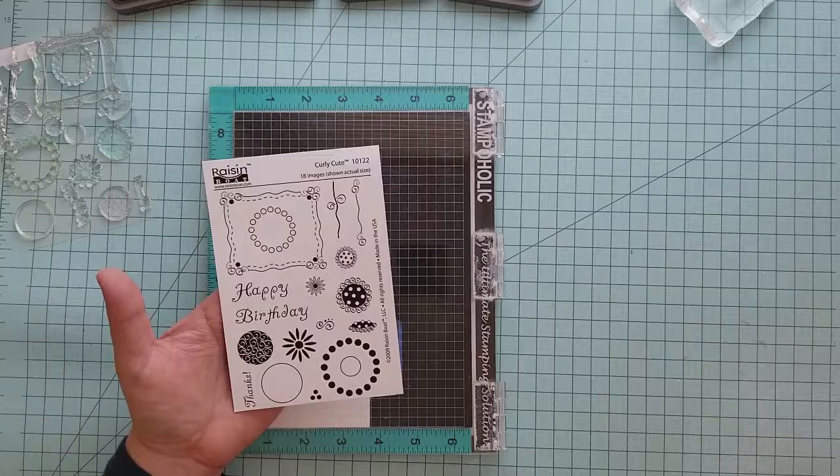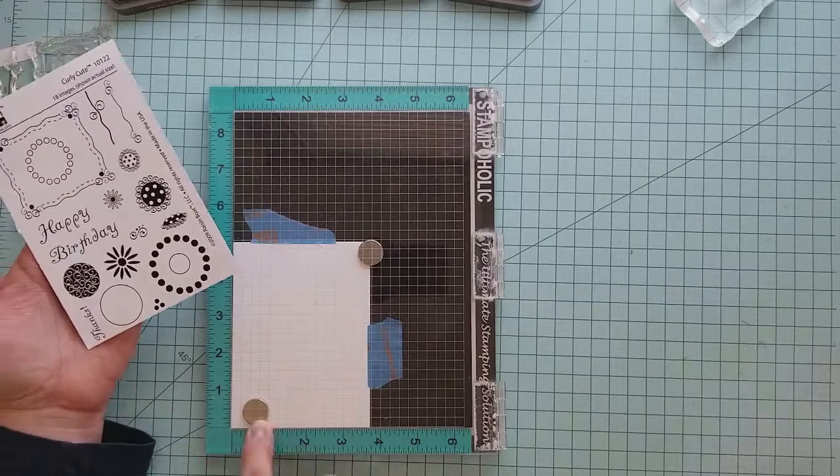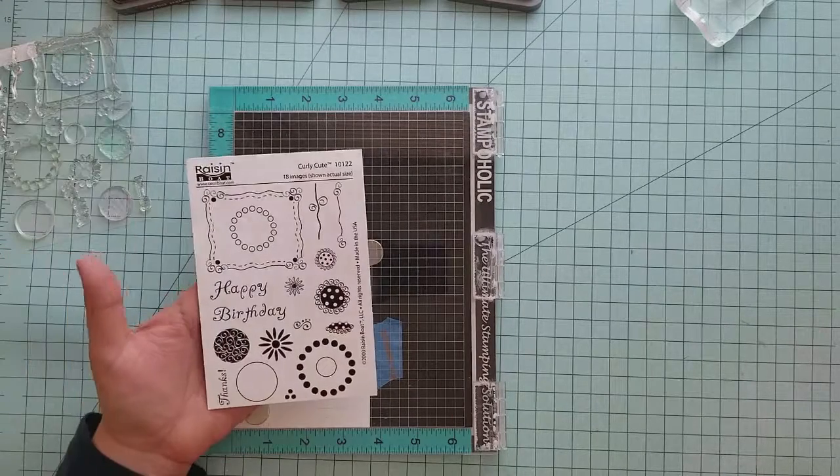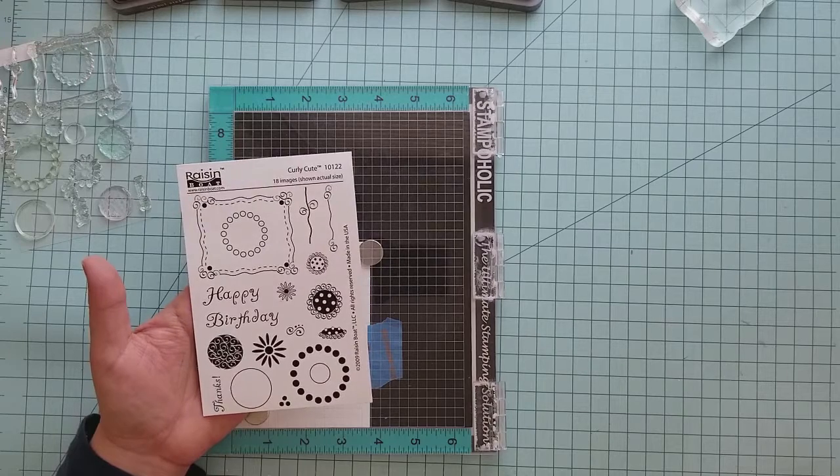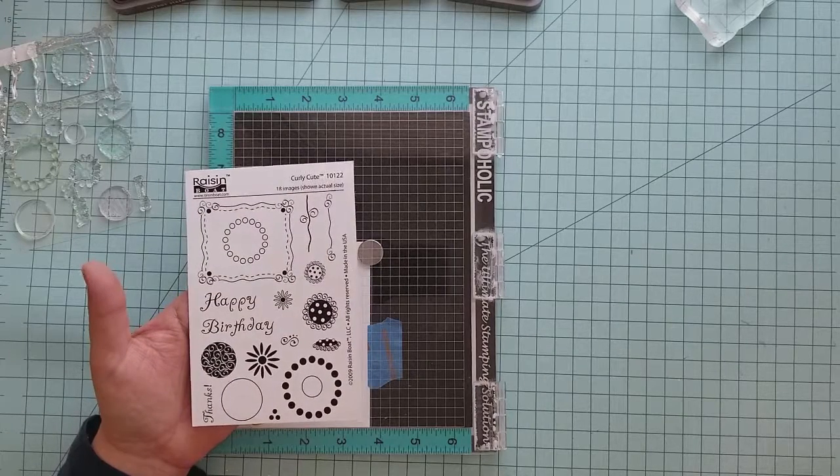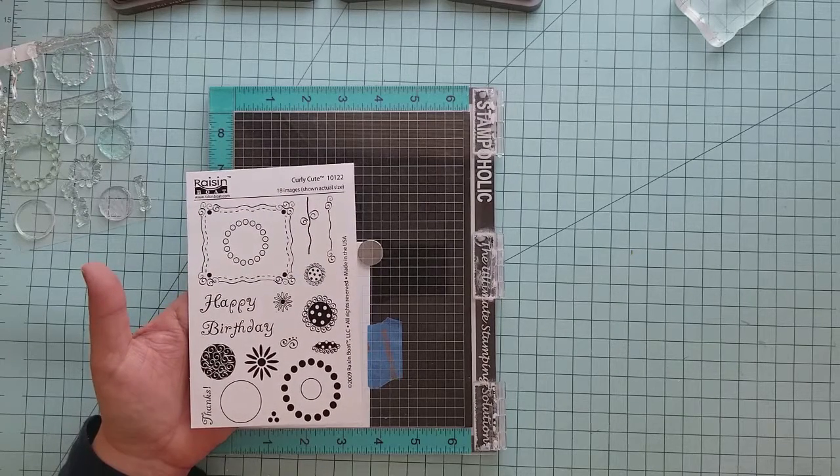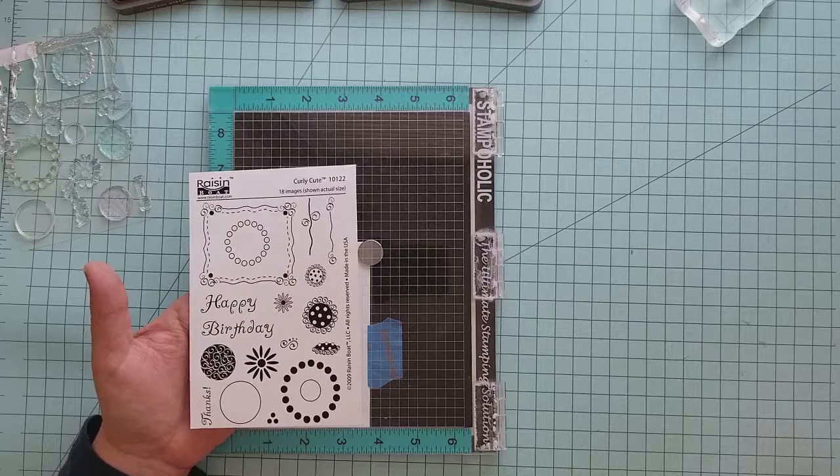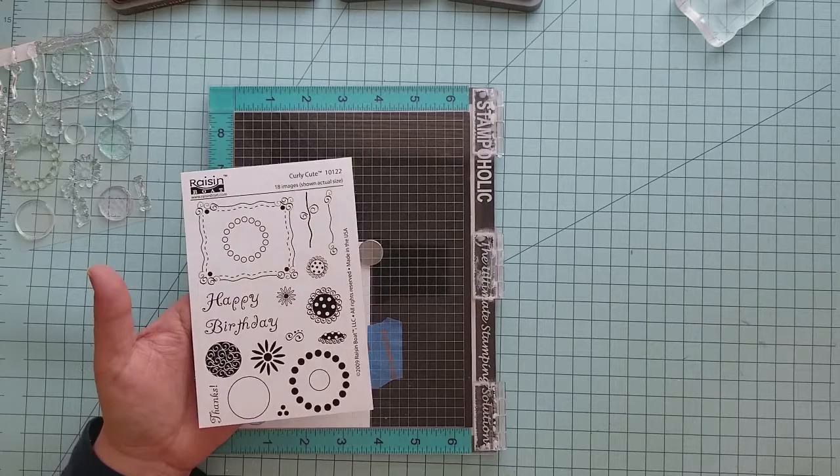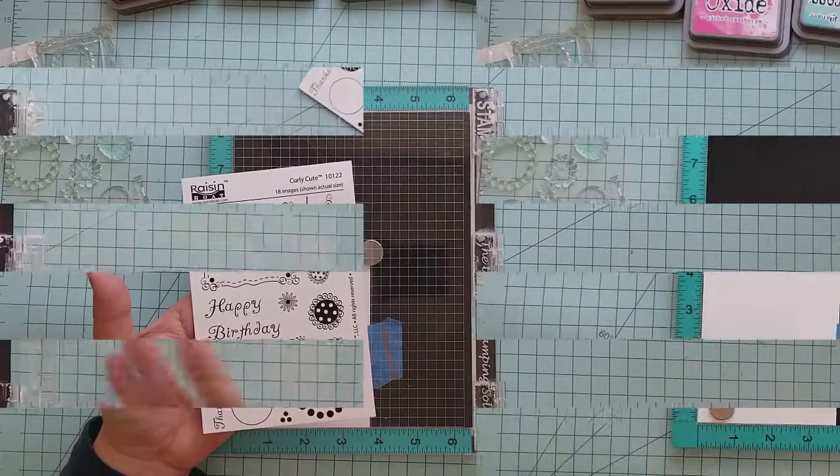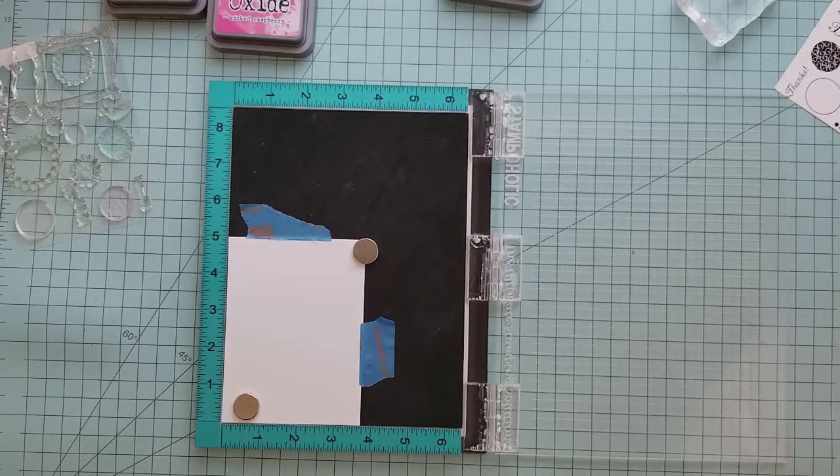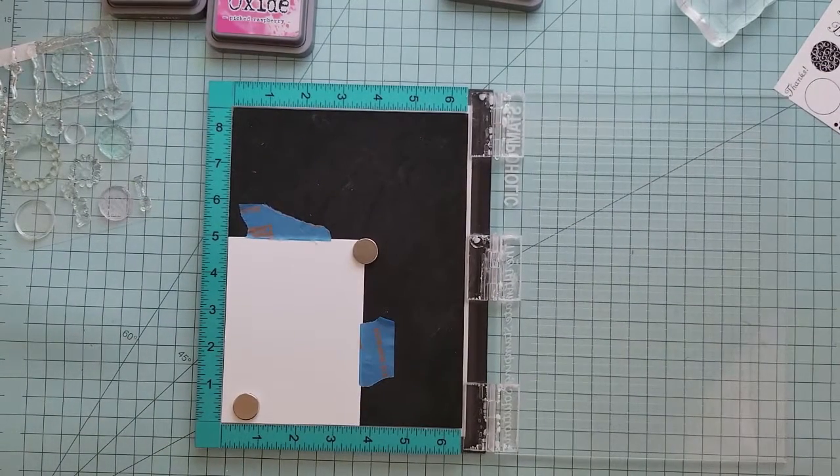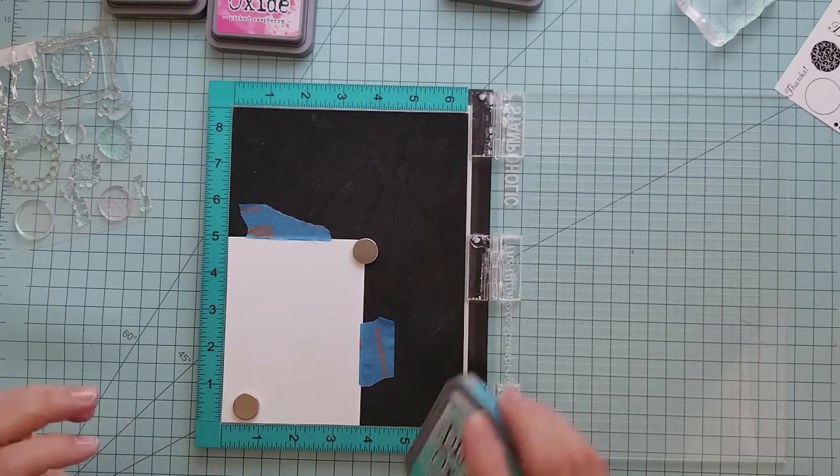The particular set that I'm using here is a Raisin Boat set and it's called Curly Cute. This is a fun set to have because all of the different elements that you see there allow you to create some great cards. I love creating my own backgrounds, so this set is great for me. I decided I wanted to use all of those little elements, or as many as I possibly could, to create a fun background for a happy birthday card.